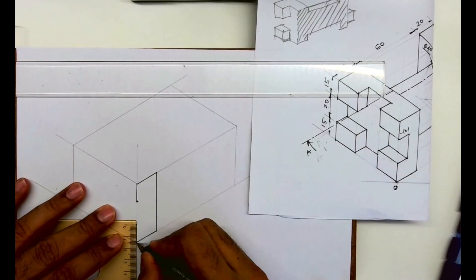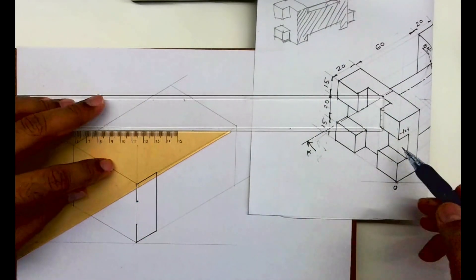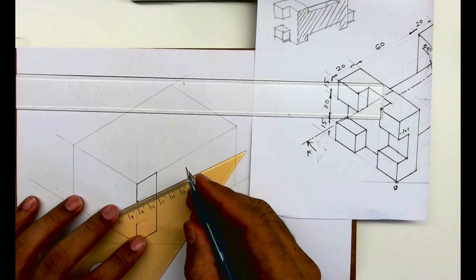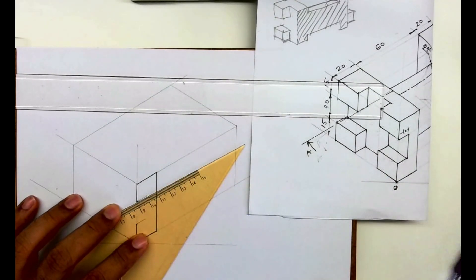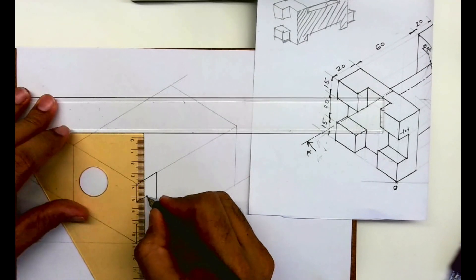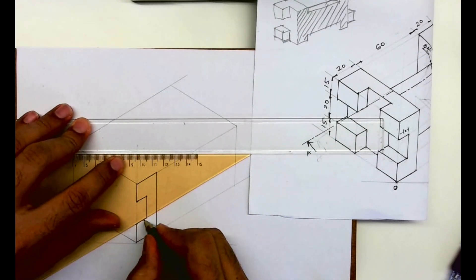After that, this height is 15. This height is also 15. Then you go inside by 10, then you draw vertical line. This is how you'll draw the front part.